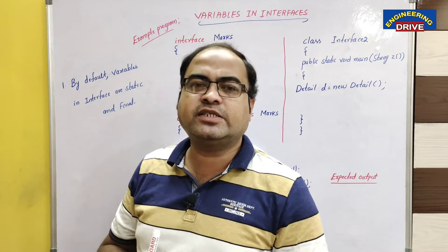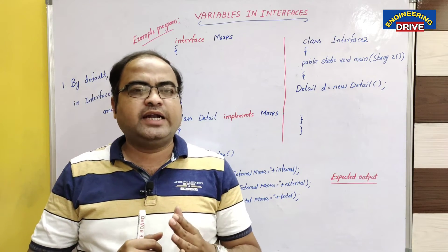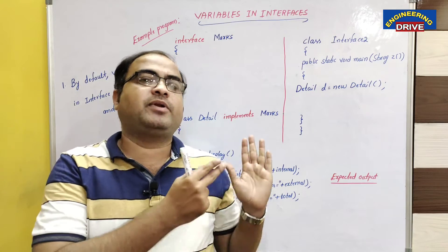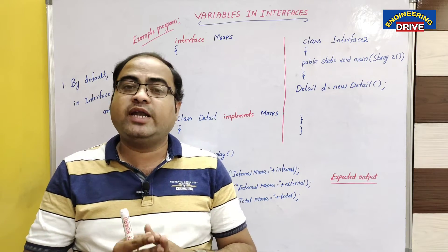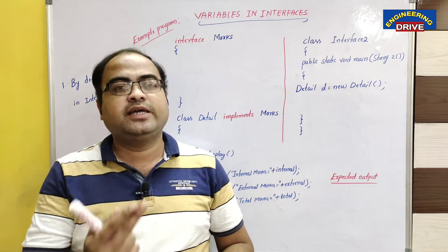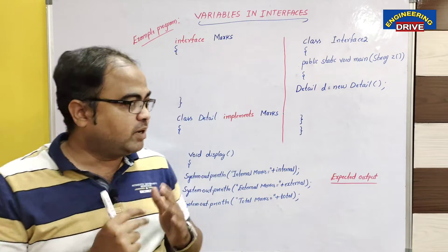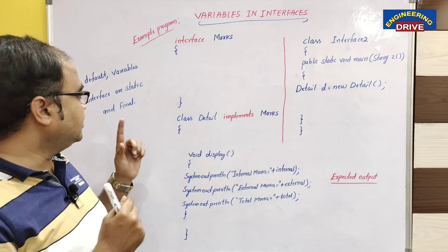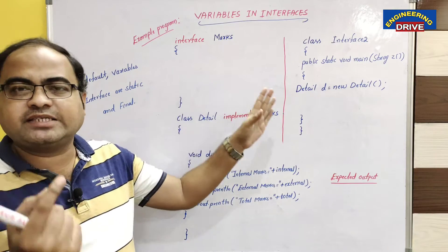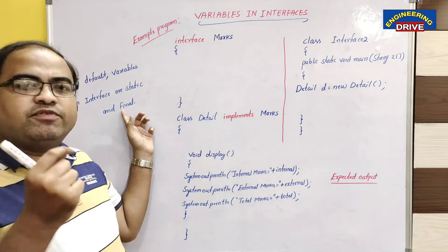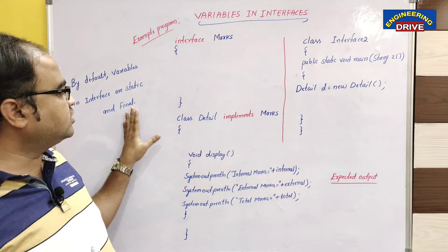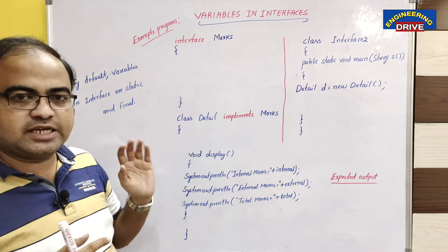These are the two properties of a variable whenever it is declared in an interface. We know that in an interface we can declare only abstract methods. But along with abstract methods, can an interface contain variables? Yes, interface can also contain variables. But what is the nature of those variables? They will be by default static, meaning they cannot be accessed by the help of objects, and they will be final, meaning their value cannot be changed in the program.